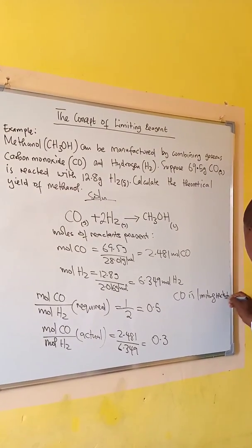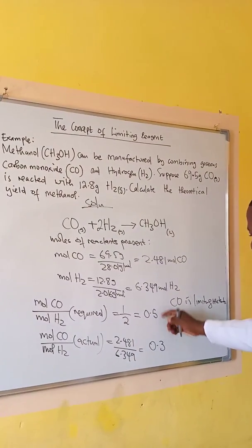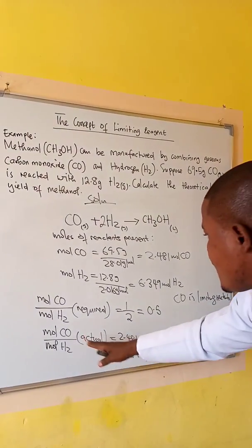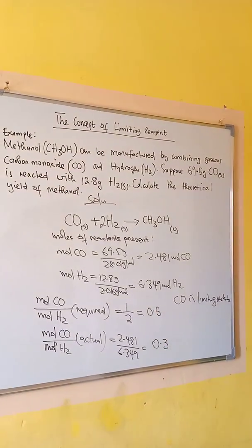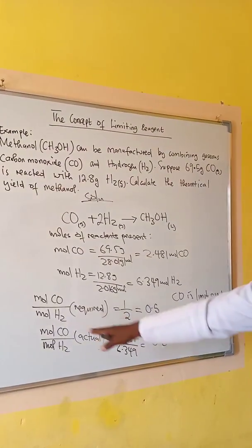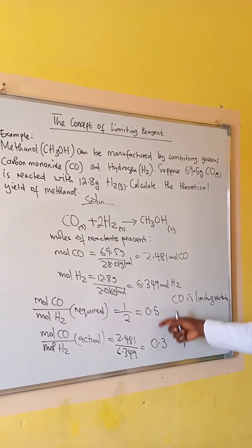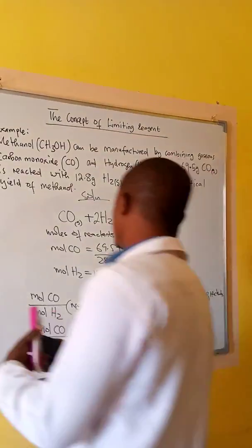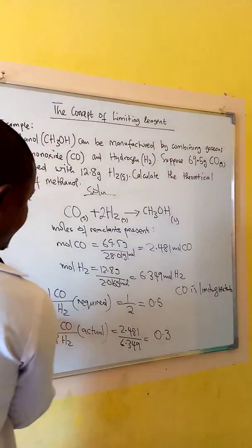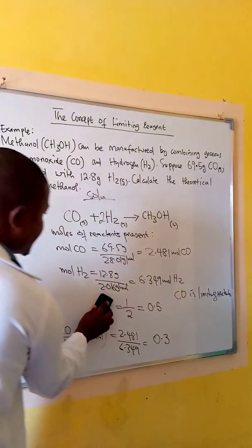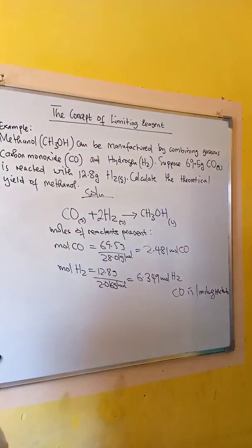If the actual mole ratio had been greater than required, carbon monoxide would have been in excess. But since the actual is less than what is required, hydrogen is in excess. We shall now use the amount of carbon monoxide to calculate the amount of methanol produced.